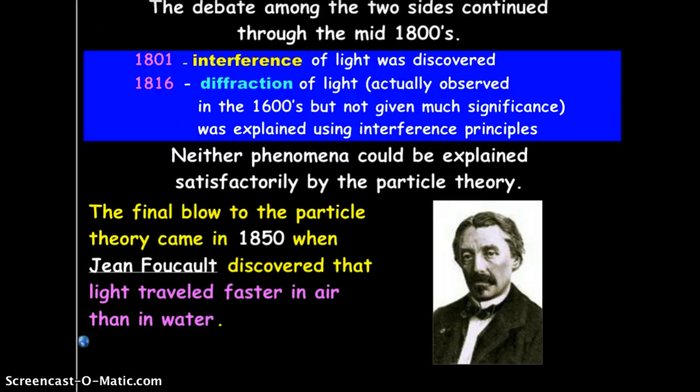So, the debate amongst the two sides continued until the mid-1800s. And in the mid-1800s, the idea of interference of light and diffraction of light came into play. And actually, diffraction was seen much earlier in this, but wasn't explained until this time. And neither phenomena could be explained satisfactorily by the particle theory. So, this was basically the final blow to the particle theory that when in 1850, Jean Foucault discovered that light traveled faster in water than in air.